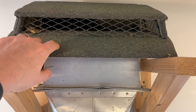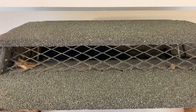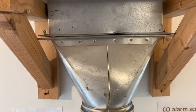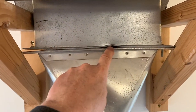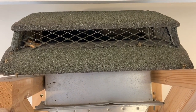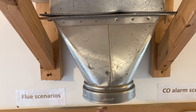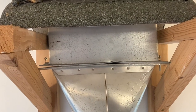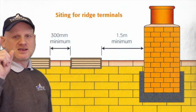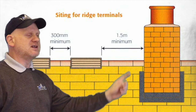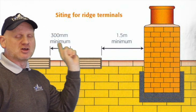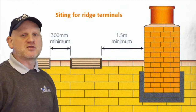This is the ridge terminal — what you would see on the roof, where the products of combustion come out. Inside the roof, you see the ridge adapter, which needs to be clamped on either side, have no damage, and have a gasket on the inside. The flue pipe connects to the ridge adapter. The ridge terminal must be more than 1.5 metres away from a structure or another chimney, and if you have two ridge terminals, they need to be a minimum of 300mm apart.